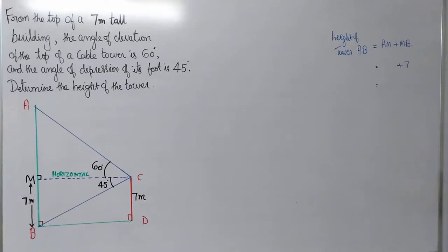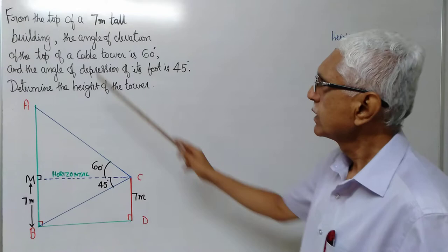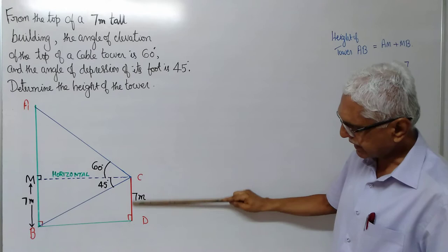Well my dear boys, one more problem. From the top of a 7 meter tall building, we will take this as the building. CD is the building whose height is 7 meter.